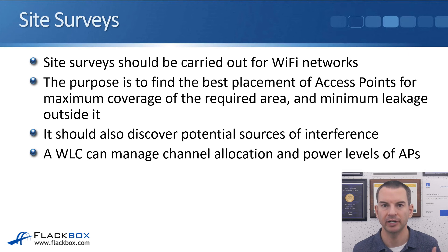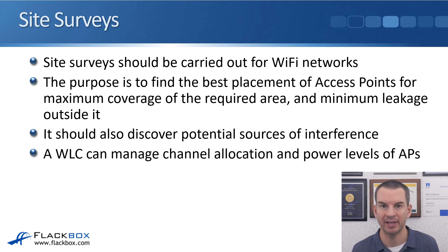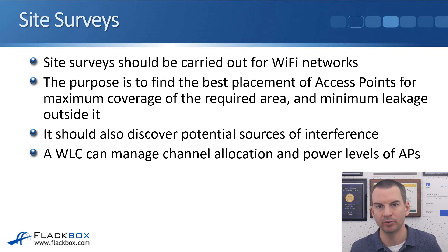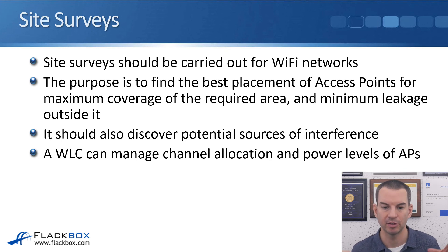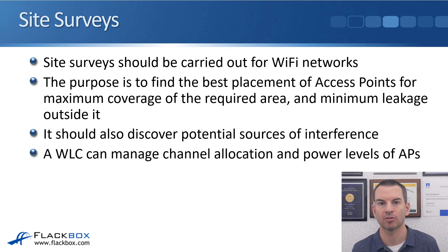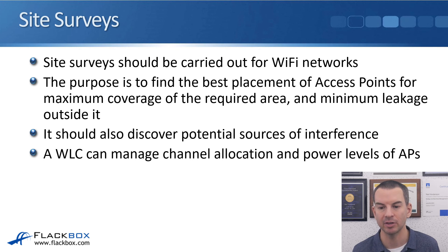Because of all the potential for interference, site surveys should be carried out for Wi-Fi networks. The purpose is to find the best placement of access points for maximum coverage of the required area and minimum leakage outside it — you want wireless inside the building, but not going outside for security reasons. The site survey also discovers potential sources of interference. You use software on your laptop, walk around the building to detect interference sources and plan AP placement. A wireless LAN controller can also manage channel allocation and power levels to get the best wireless quality.